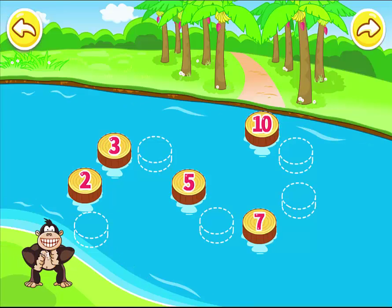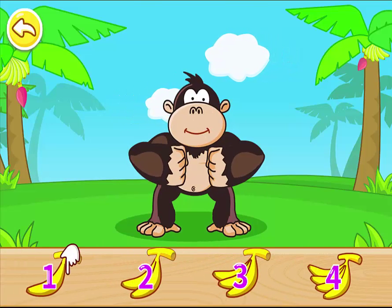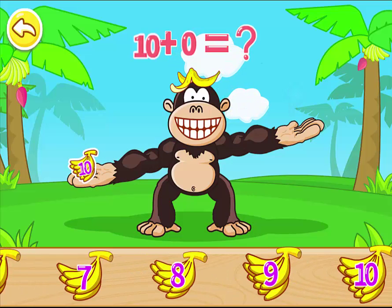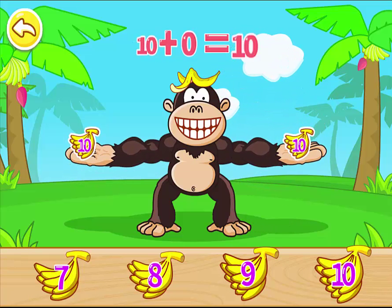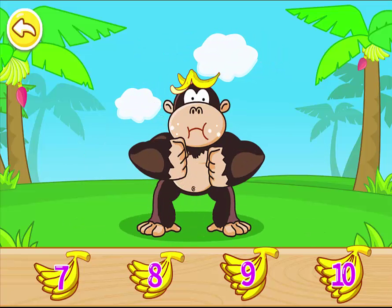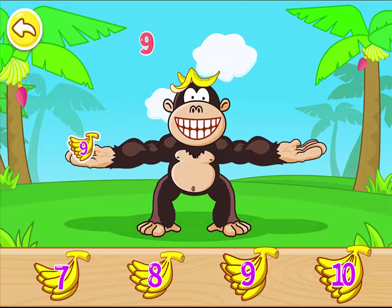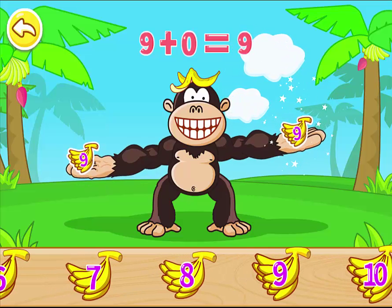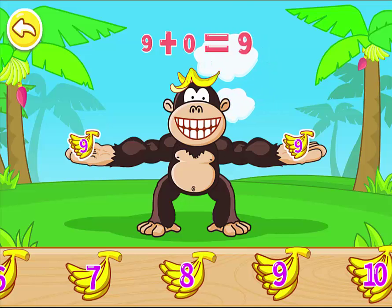Hi, friend! Please order the numbers in the river. Ten plus zero is equal to ten. Ten plus zero is equal to ten. Nine plus zero is equal to nine. Nine plus zero is equal to nine.